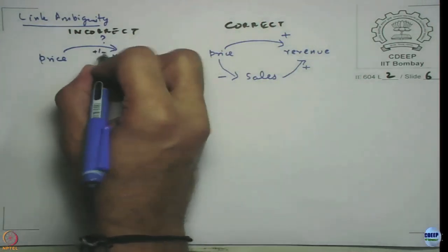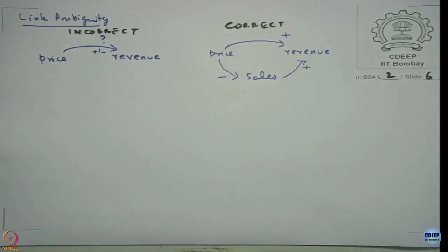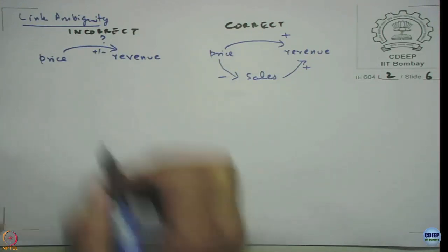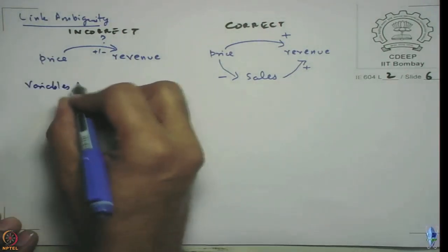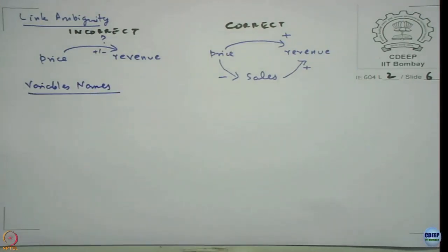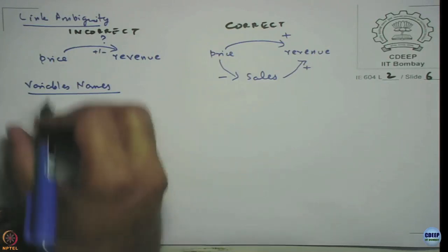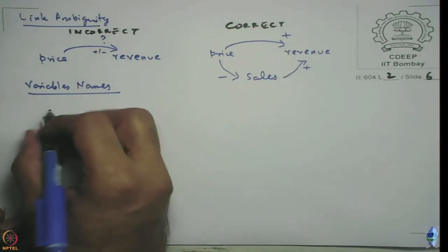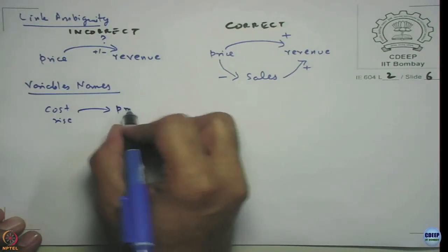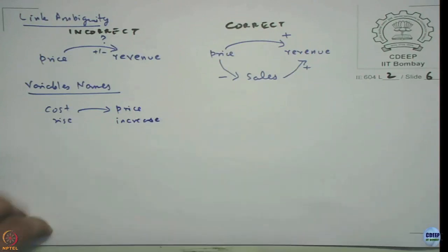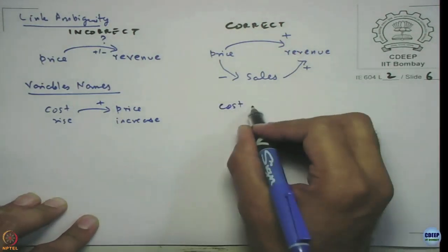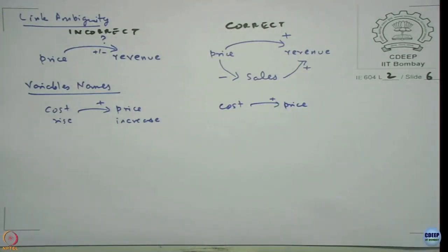So you do not do a plus-slash-minus and just leave it. Let us look at variable names. The point is that variable names should be nouns or noun phrases and we should avoid actions, since the action is already captured in the arrows. Whatever you write on the left side is the incorrect way. We do not write 'cost price increases' or 'price increase' — that is not correct. The correct one would be: as cost increases, price increases in general. Do not be too critical on just those two variables here; we are just focusing on one small link.